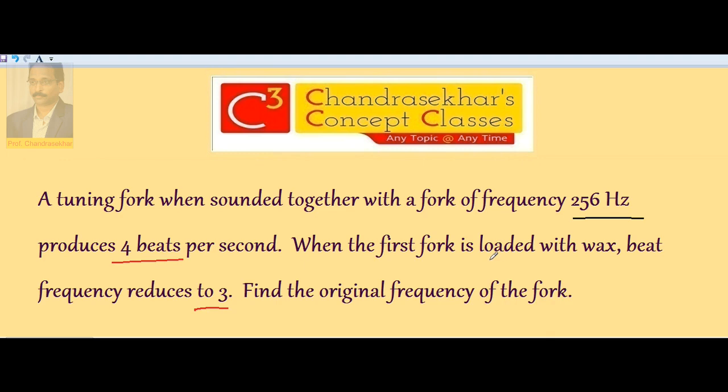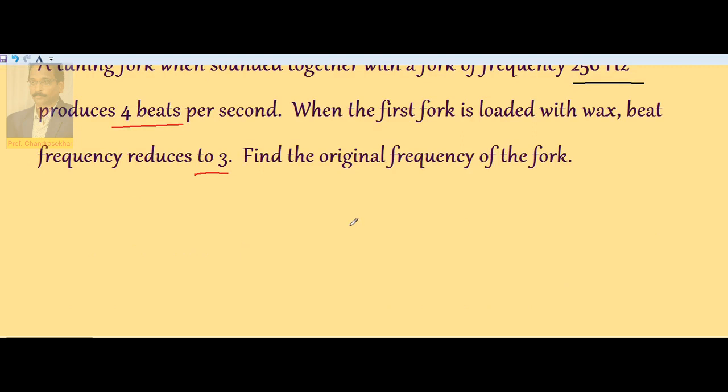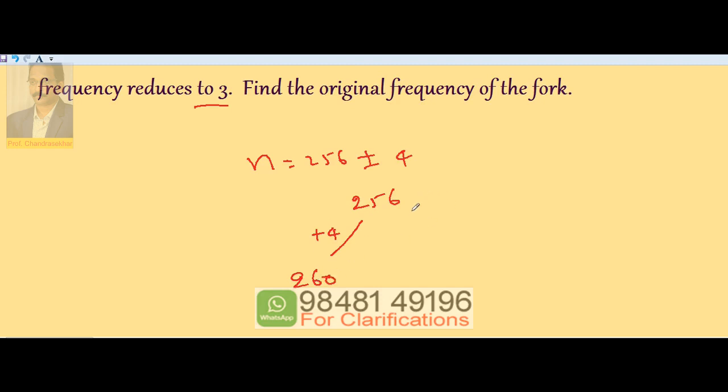The unknown frequency tuning fork is vibrated with 256, producing 4 beats. Since beat frequency is 4, the unknown frequency n must equal 256 plus or minus 4. So the two possibilities are 260 or 252.